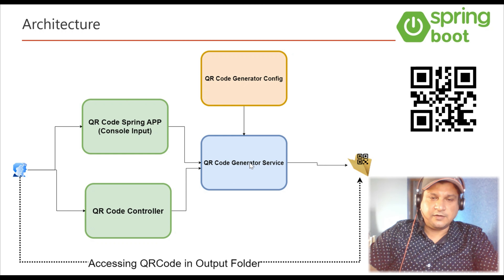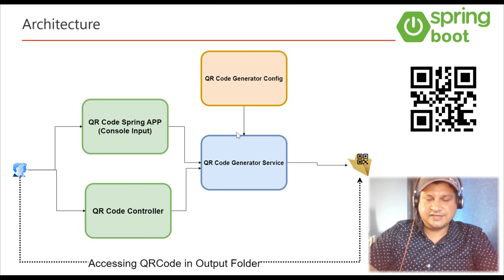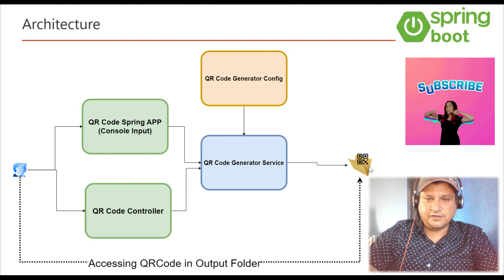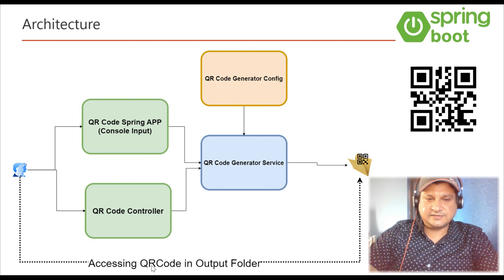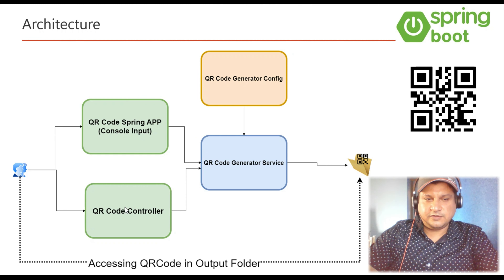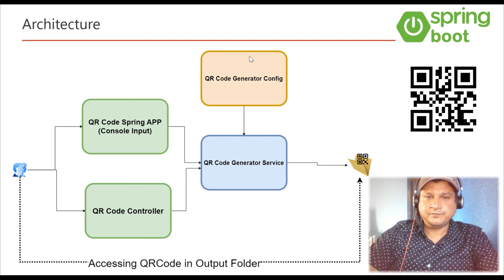Once the QR code is generated, it will be saved into a folder whose location comes from the QR code generator configuration. The config specifies where to save the QR code, and the user can access the QR codes in that folder directly. So this is a simple application with four modules: console input, the REST controller, the business layer class where the generation logic lives, and the configuration which provides the output folder location.